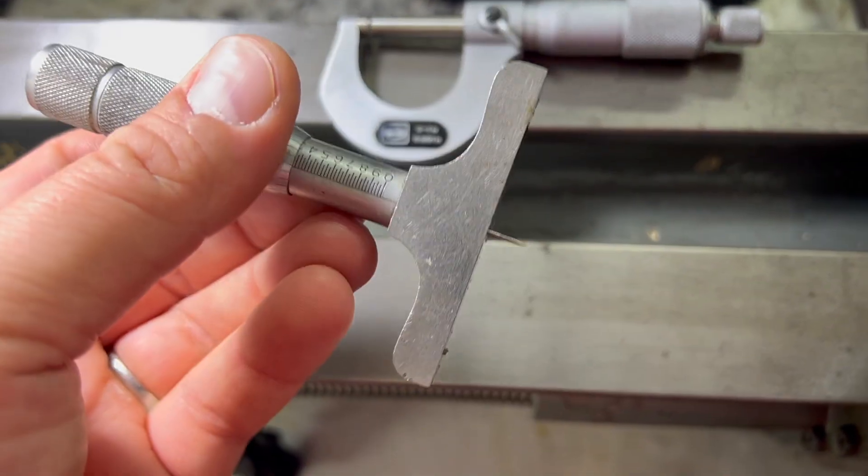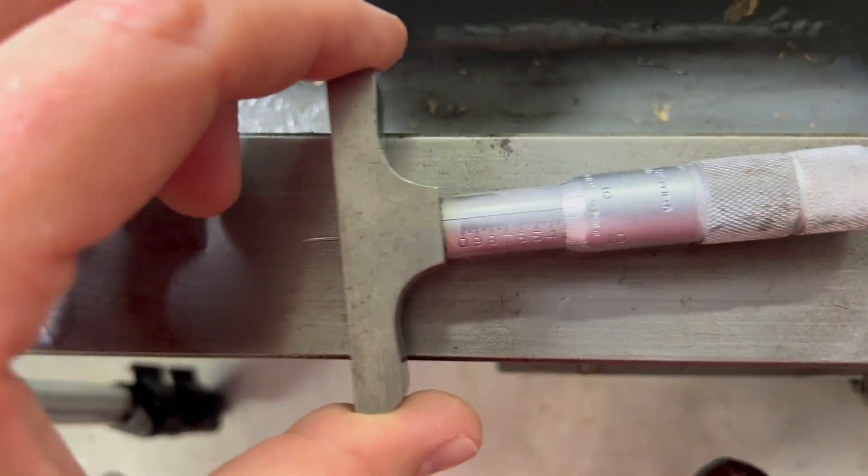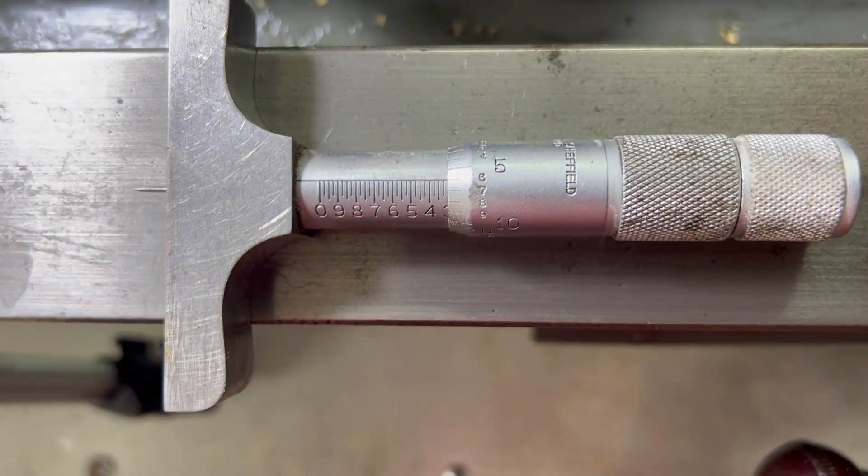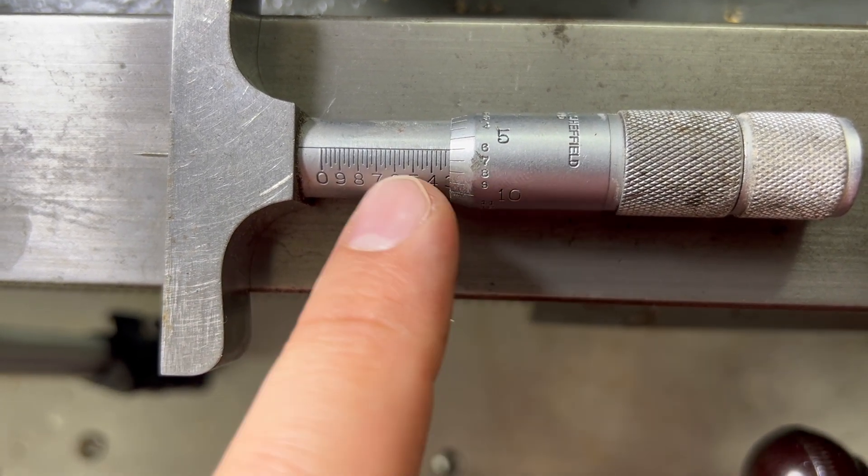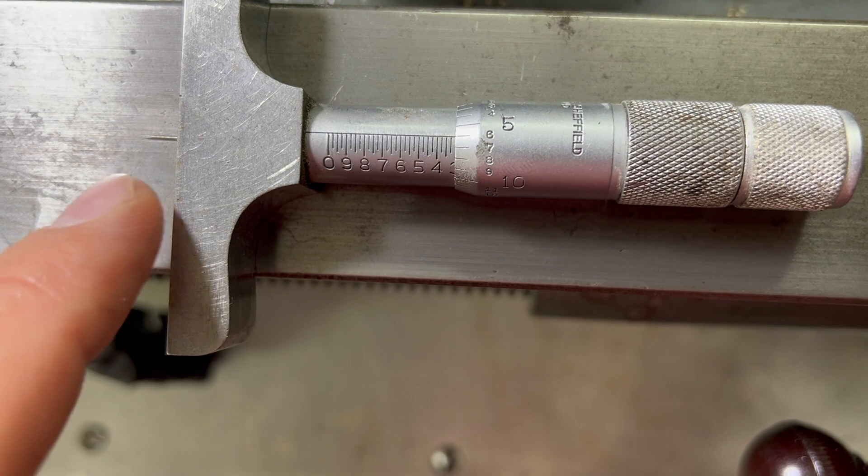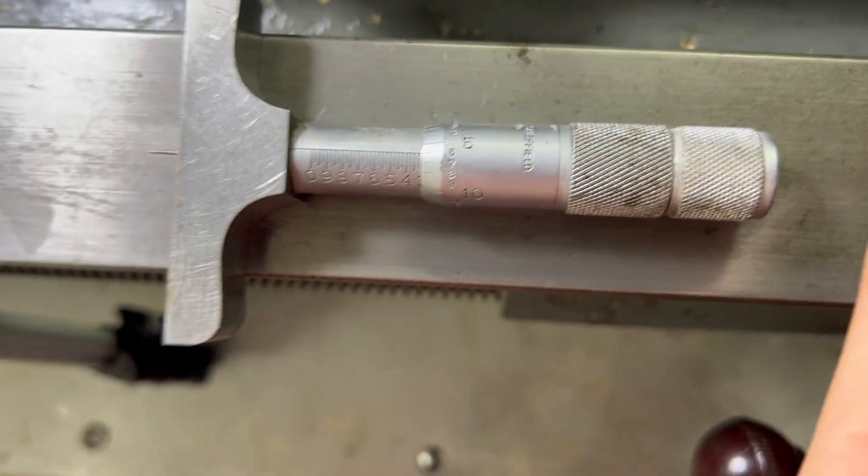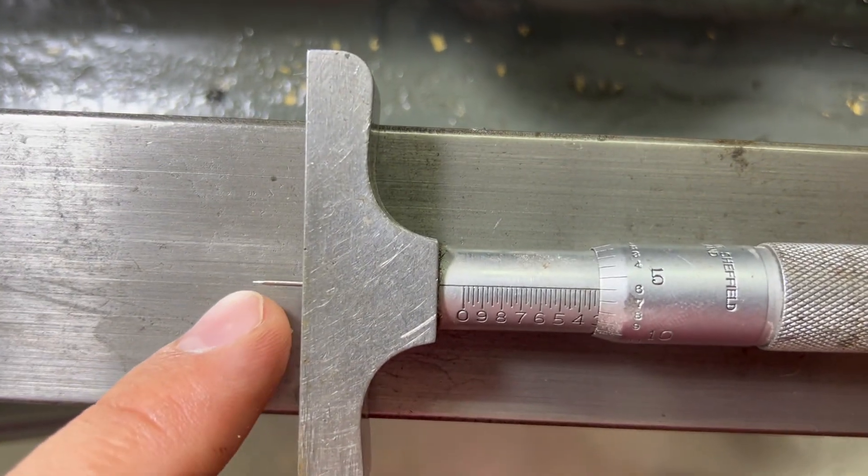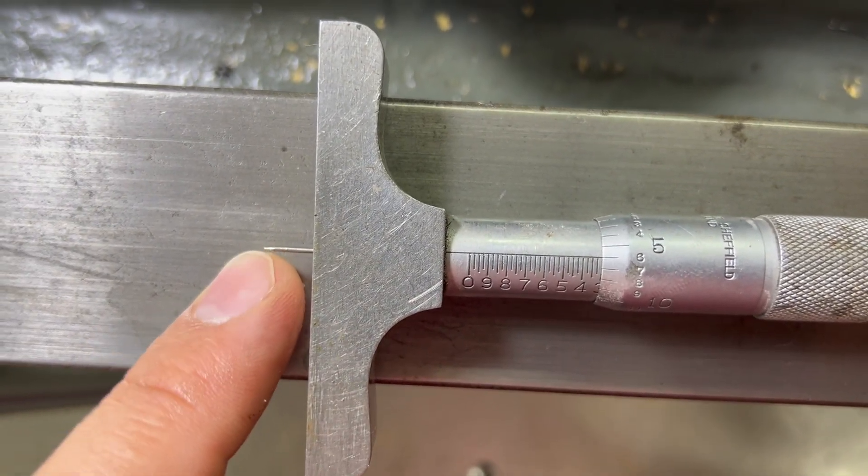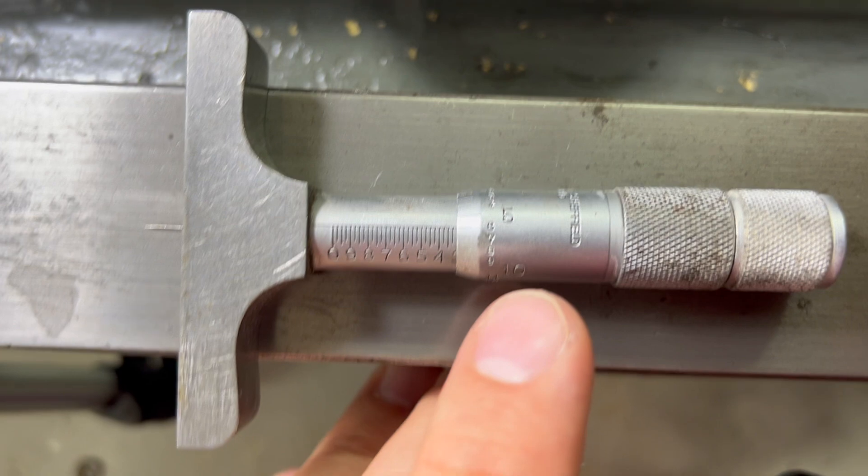Also here I have a depth gauge which pretty much works on the same principle. I don't see a lot of these used on machining YouTube. Interestingly, the counter works backwards because obviously the needle comes down and out. And this one doesn't have a little ratchet on the end, which would be nice, because I'm pretty sure if you screwed that in hard enough it would blunt the end of the needle, which is the depth gauge. But the same principle.